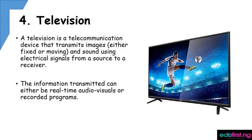The fourth device for today is the television. A television is a device that is present in almost every home and it can be defined as a telecommunication device that transmits images, either fixed or moving, and sounds using electrical signals from a source to a receiver. An information transmitter can either be real-time audio visuals or recorded programs. An example of a real-time audio visual is a live football match or the daily news, while the recorded program can either be a movie or a music video.